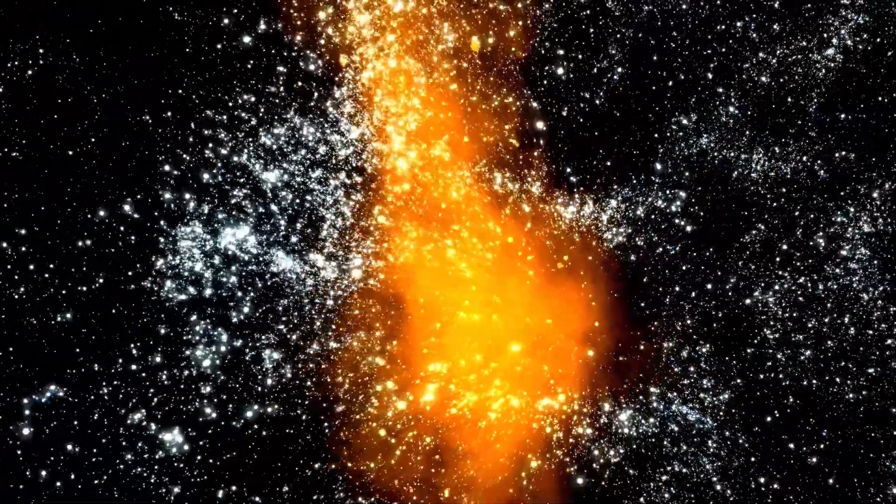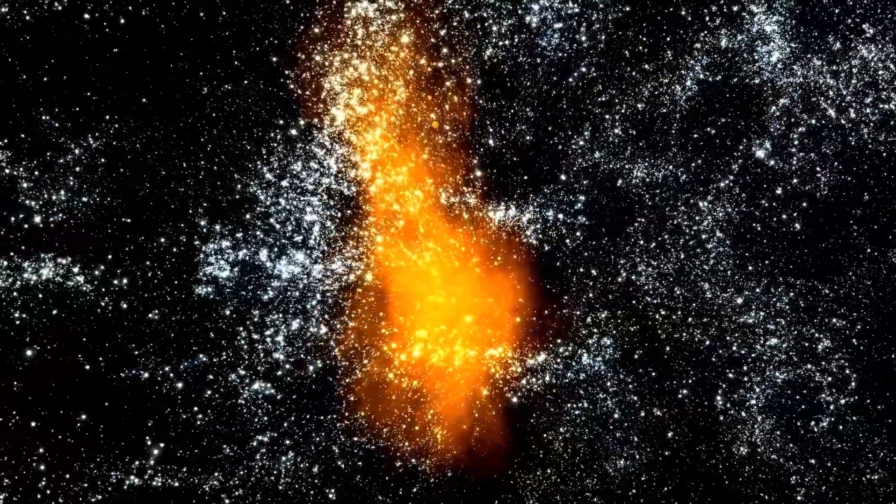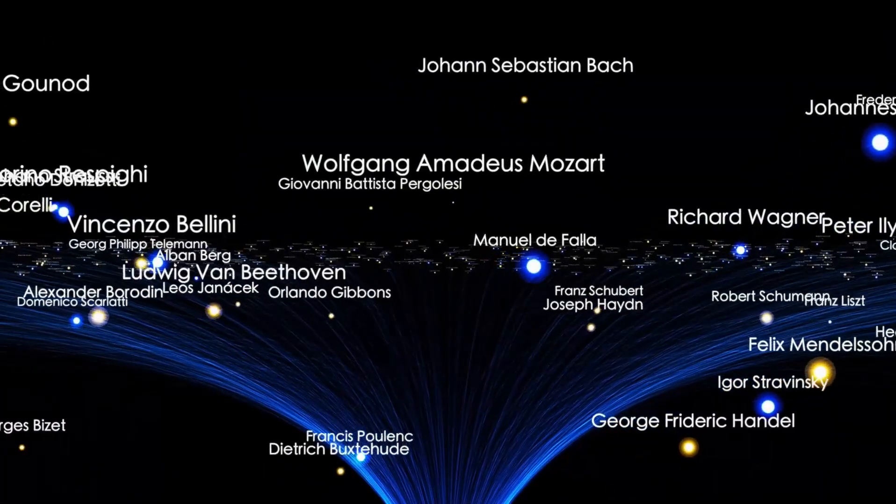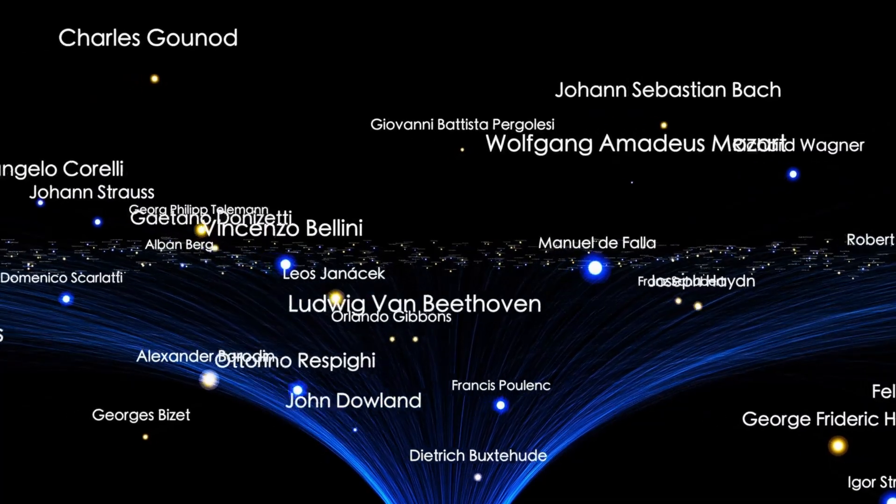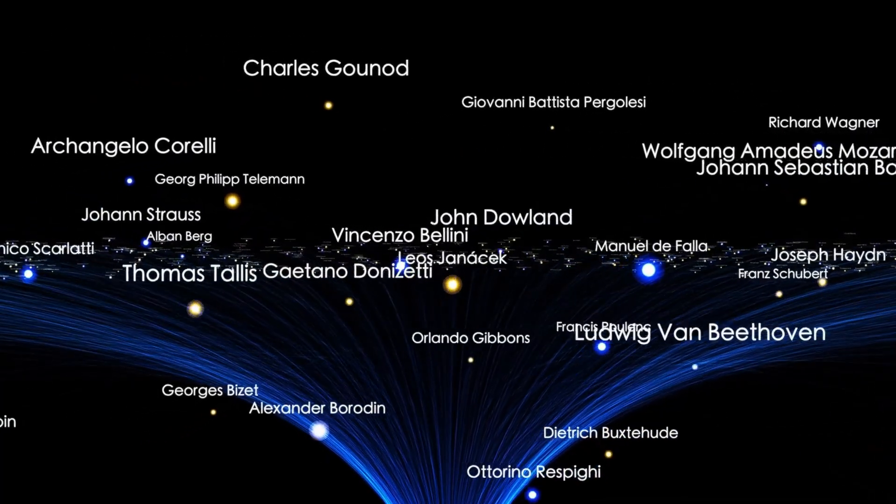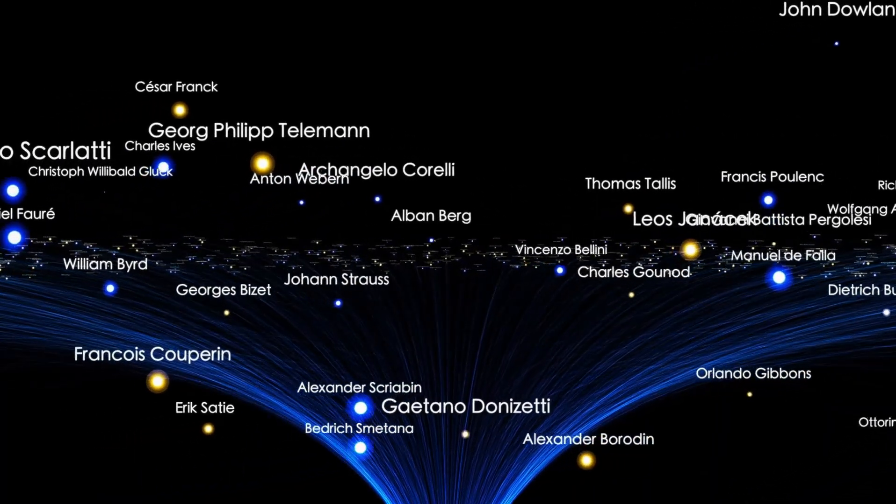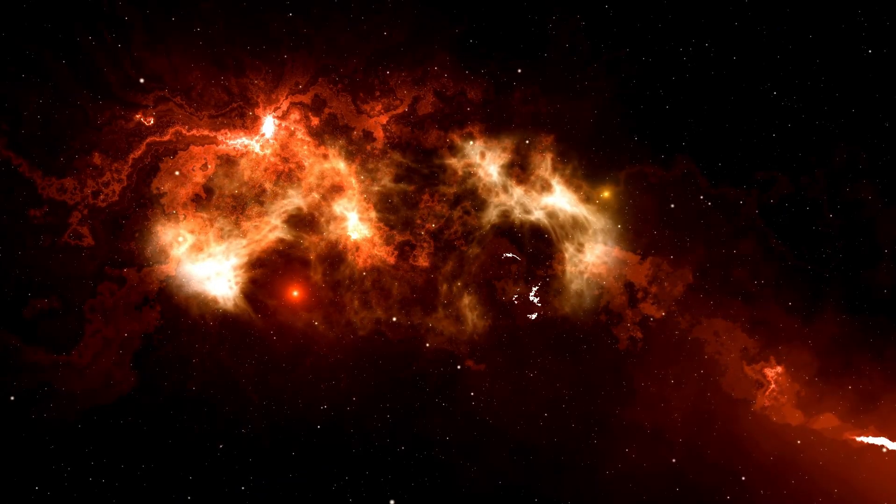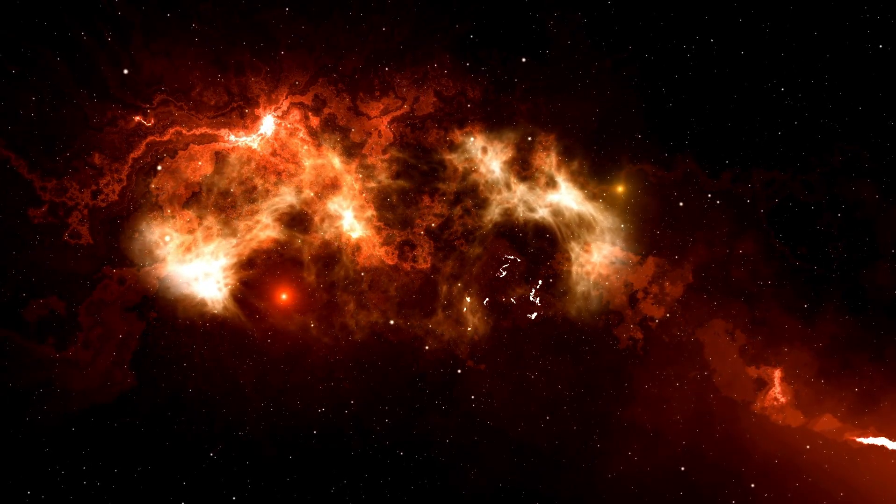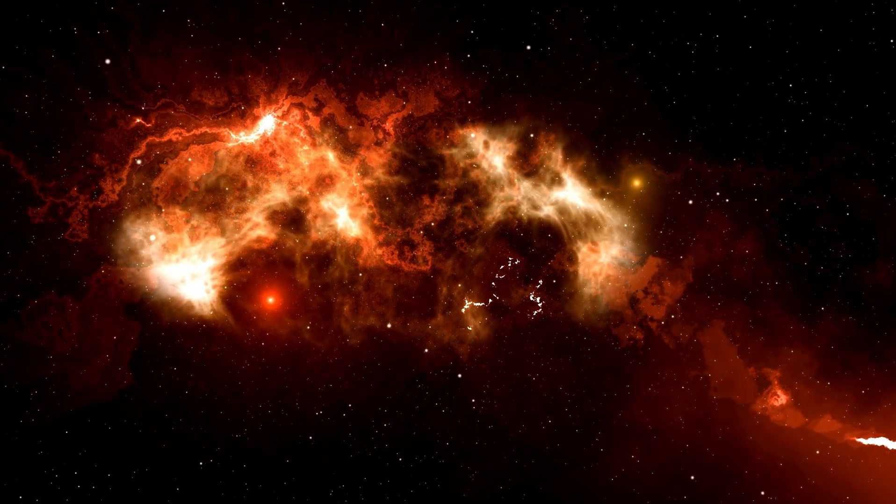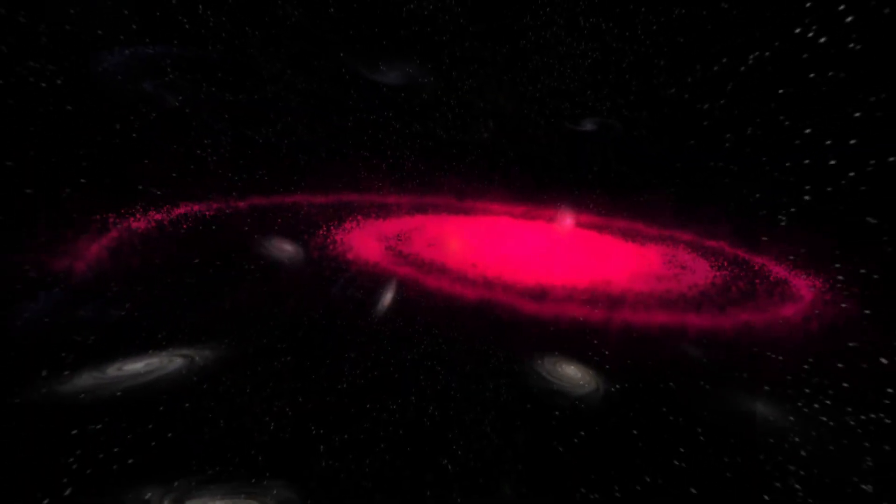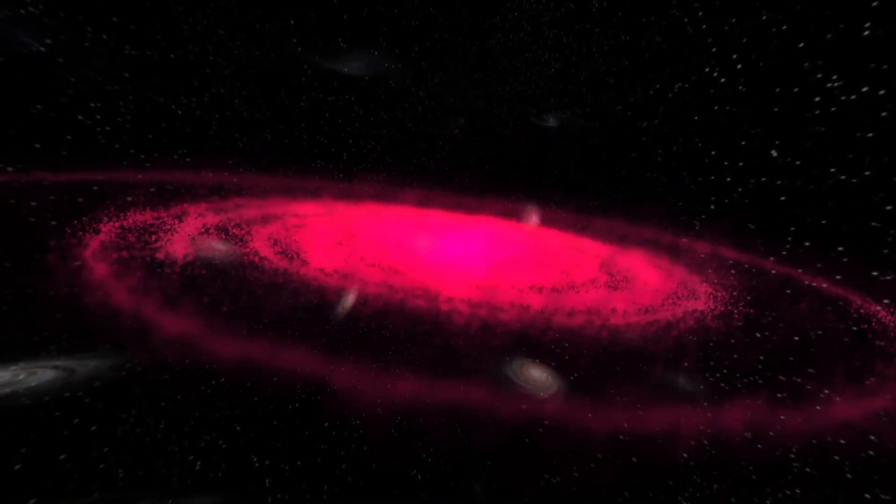Closer to home, Webb has turned its gaze toward our own solar system, studying the icy moons of Jupiter and Saturn. Its instruments have confirmed the presence of water plumes erupting from Europa and Enceladus, each a possible haven for microbial life beneath thick layers of ice. Webb's observation of the presence of complex organic molecules in these plumes has rekindled hopes that oceans under these ice crusts might be brimming with primitive life. These are not hypothetical environments, they're working systems, dynamic and riddled with chemical potential.